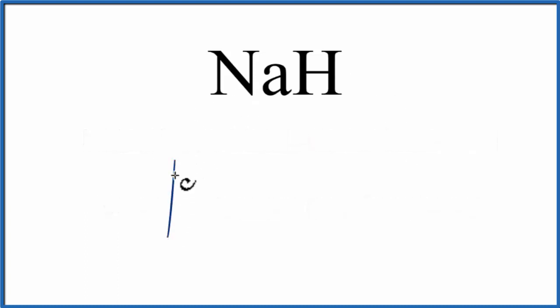So we draw Na and then H. Sodium is in group 1 on the periodic table and has one valence electron. Hydrogen is also in group 1 and has one valence electron as well.